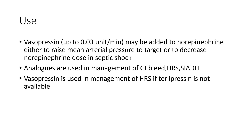Regarding the uses of vasopressin: vasopressin up to a dose of 0.03 units per minute is advised by the Surviving Sepsis Guidelines as a vasopressor in managing septic shock. According to SSG, it can be used as a second-line vasopressor after norepinephrine, or at an earlier stage to attain the targeted MAP. Its use in septic shock helps maintain or attain the MAP and also reduces the dose of norepinephrine required.